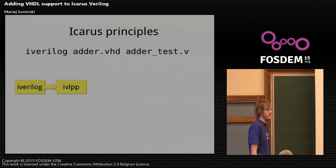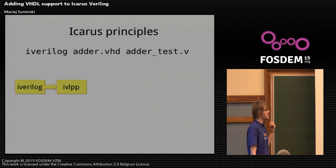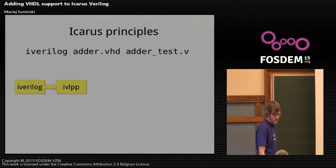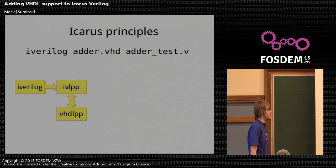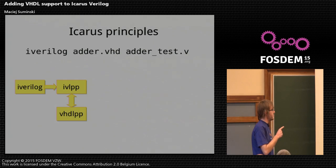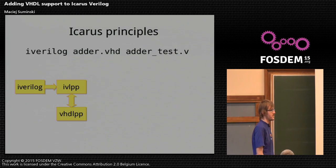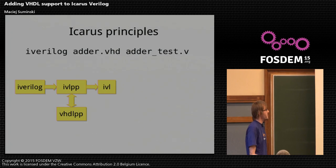The next step is IVLPP, which stands for Icarus Verilog Preprocessor. It's quite simple and has two main tasks: first, to unwind macros, and second, to detect VHDL files which are passed further to VHDLPP — which, as you can guess, is the VHDL preprocessor. That's the main area of development for me. Basically, you can say that it translates VHDL to SystemVerilog code.